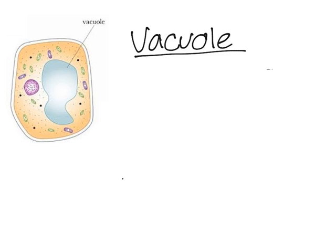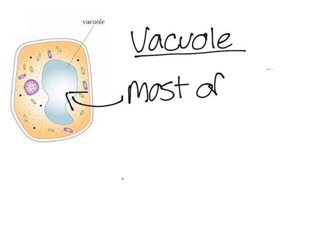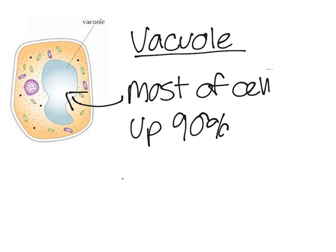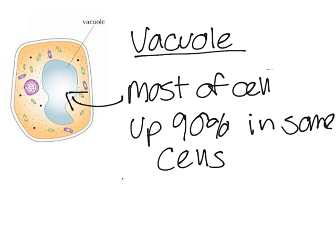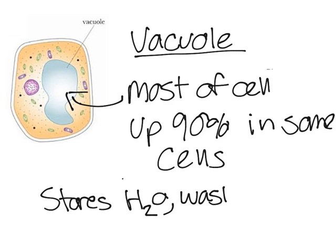Plants have a big central vacuole, as you can see right there. It takes up most of the cell — up to 90% of the volume in some cells. Its function is mostly to store water, nutrients, pigments, and waste products.